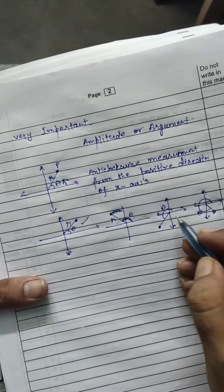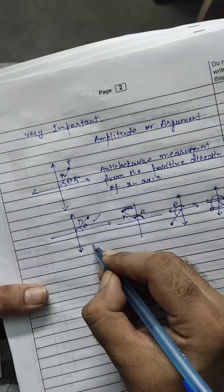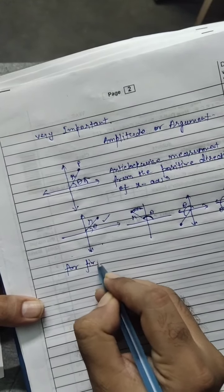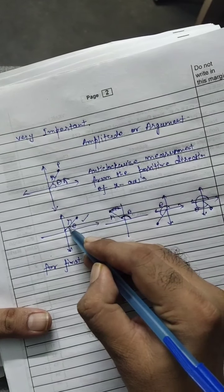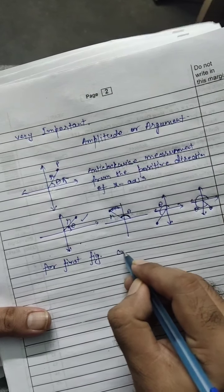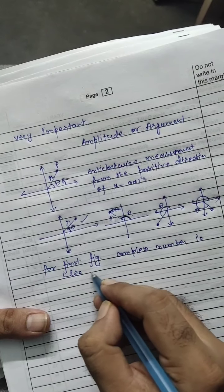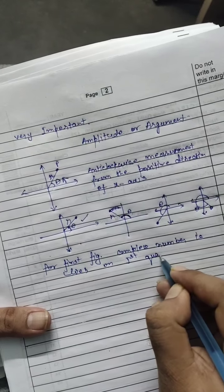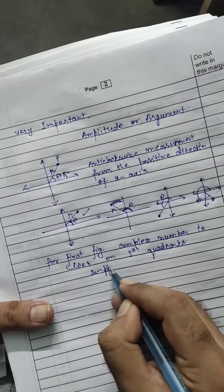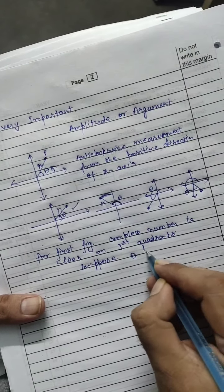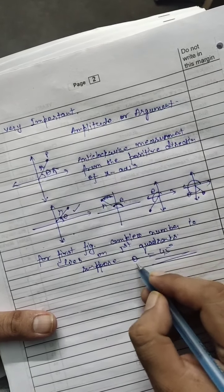For the first figure, if the complex number lies in the first quadrant, and suppose theta here is 45 degrees — I am taking 45 degrees. So students listen very carefully: here theta is not only 45 degrees. Theta means argument. The argument is not only 45 degrees.